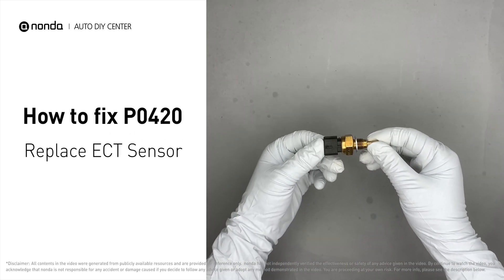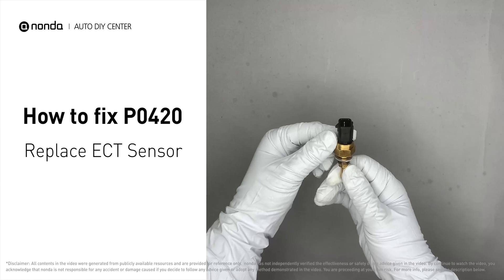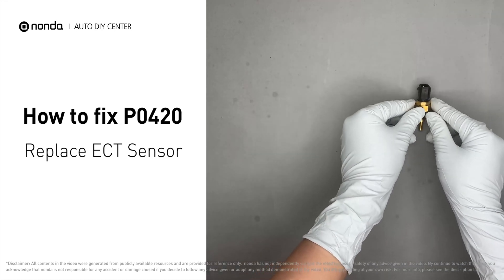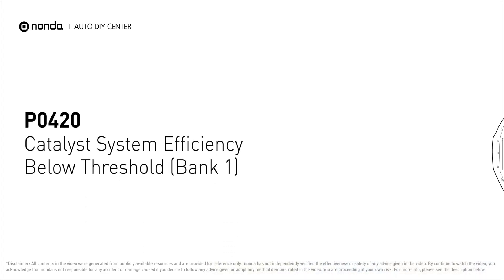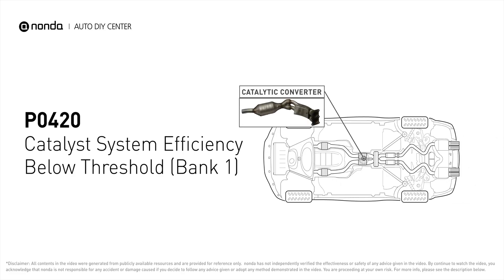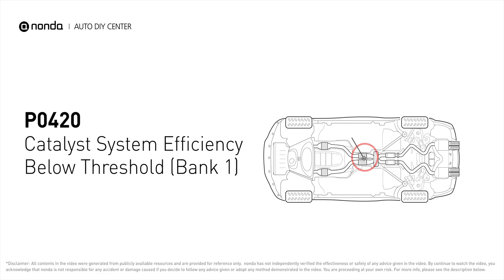By replacing the damaged ECT sensor, you can easily fix the P0420 error code by yourself. P0420 is one of the most common error codes. It means your catalyst system efficiency is below threshold near engine bank 1, which indicates that the catalytic converter is not functioning efficiently, so the vehicle is increasing the output of harmful pollutants.